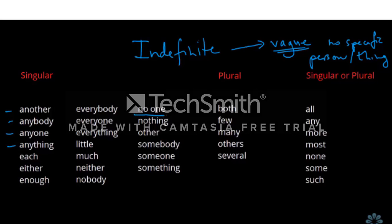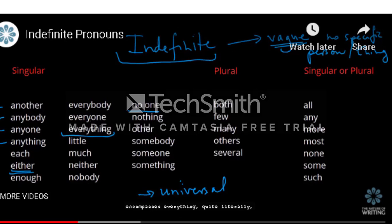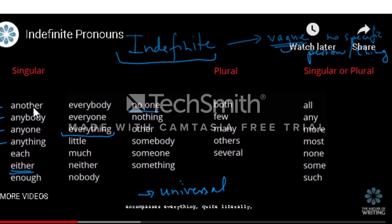If you were to say 'no one', it refers to an absence of something. Words that begin with 'any', like anybody, anyone, anything, and words that begin with 'every', like everybody, everyone, everything, and also nobody, nothing, somebody, someone — these words all refer to singular indefinite pronouns. The first group is always considered singular, and they take a singular verb as well.